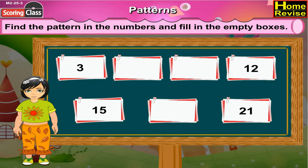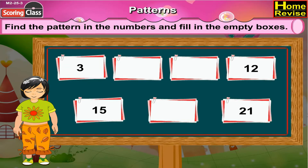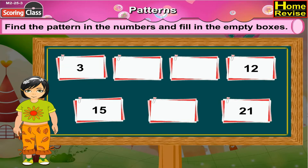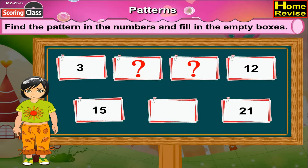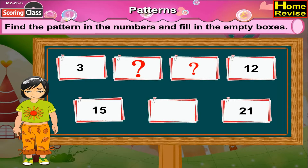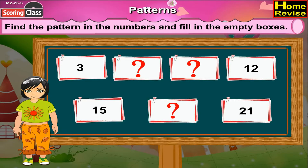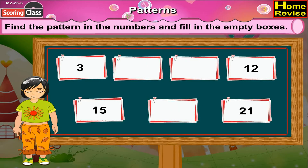Now the next number strip. It has 3, an empty box, another empty box, 12, 15, an empty box, and 21.